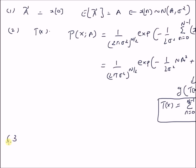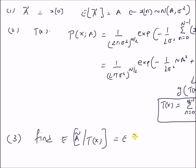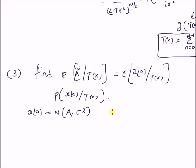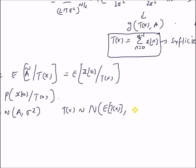Now the third step is to find the expectation of A-tilde given the sufficient statistic T(x). Since we assumed A-tilde = X(0), it is equal to the expectation of X(0) given T(x). To determine this conditional expectation, we need the conditional distribution P(X(0) | T(x)). In this model, X(0) follows a Gaussian distribution with mean A and variance sigma squared, and T(x) also follows a Gaussian distribution since it is a linear combination of Gaussian observations.